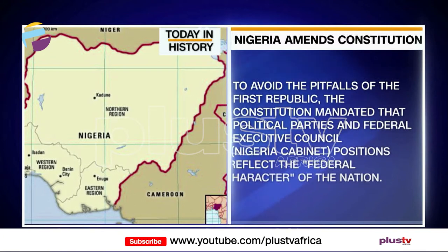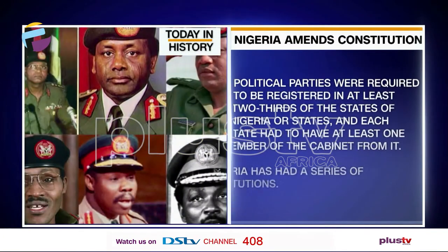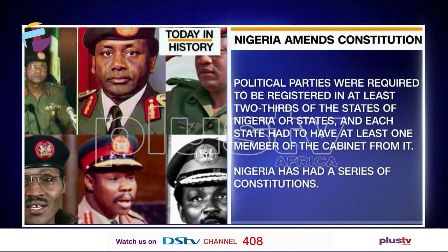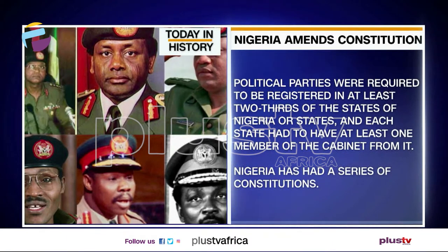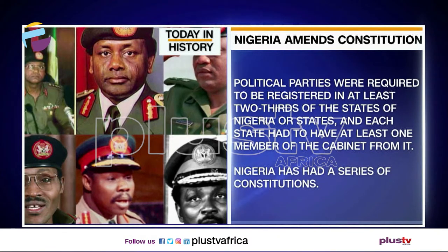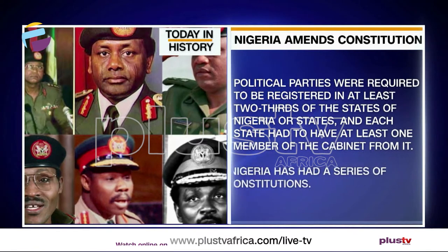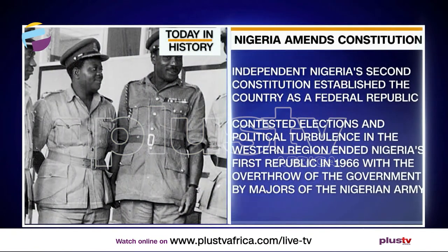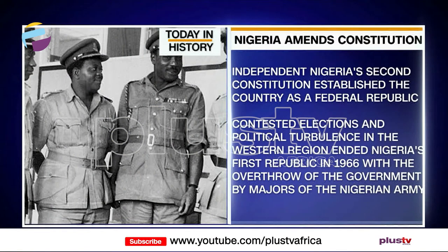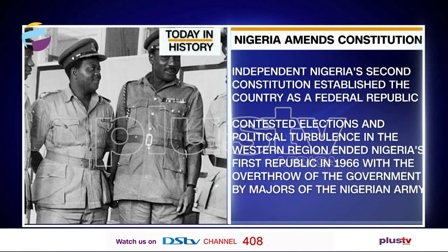Over time, Nigeria has had a series of constitutions. The 1999, which is the most recent, the independent Nigeria's second constitution established the country as a federal republic, with contested elections and political turbulence in the western region, and then Nigeria's First Republic ended in 1966 with the overthrow of the government by majors in the Nigerian army — the 1966 coup.